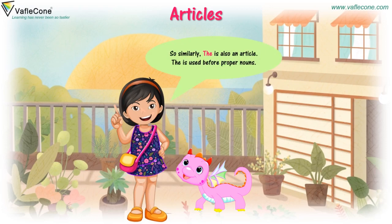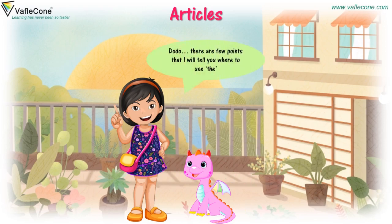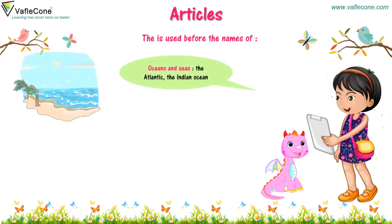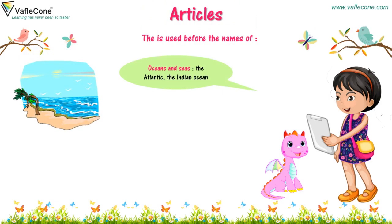The is used before proper nouns. Dodo, there are a few points I will tell you about where to use 'the'. The is used before the names of oceans and seas — for example, the Atlantic Ocean, the Indian Ocean. Before rivers, such as the Ganga and the Yamuna.